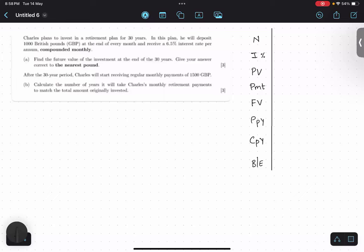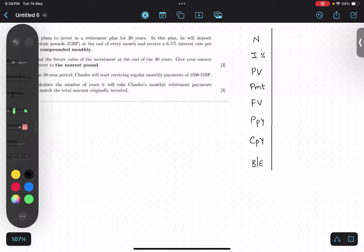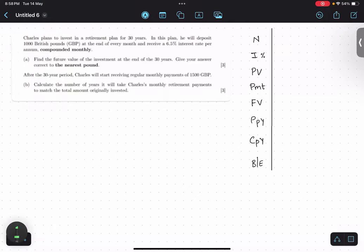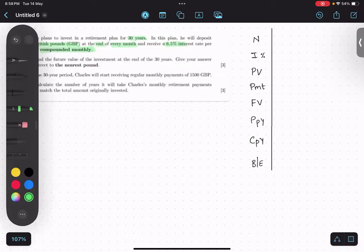In this particular question, Charlie planned to invest in a retirement plan for 30 years. In this plan, he will deposit £1000 at the end of every month. It's 6.5 percent interest and compounding is happening monthly. These are very important points which are mentioned.